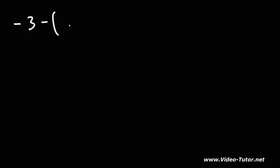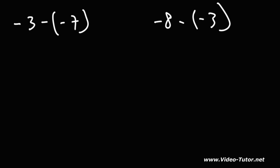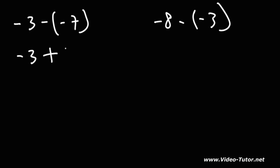What about these two examples? Negative 3 minus negative 7, and negative 8 minus negative 3. Go ahead and try those two. Here we have two negative signs next to each other, so we can replace that with a positive sign. So this is going to be negative 3 plus 7, and this will be negative 8 plus 3.